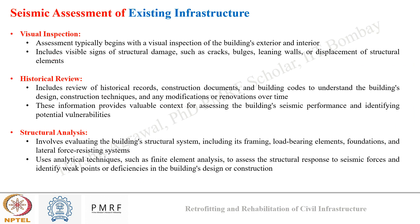The first category is visual inspection, where we inspect the building's interior and exterior for signs of structural damage such as cracks, bulges, leaning walls, and displacement of structural elements. The second is historical review, which helps identify weak portions of infrastructure. It includes review of historical records, construction documents, and building codes to understand the building's design, construction techniques, and any modifications or renovations over time, providing valuable context for assessing seismic performance and identifying potential weaknesses.